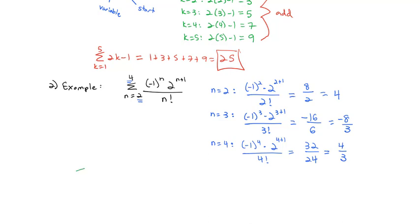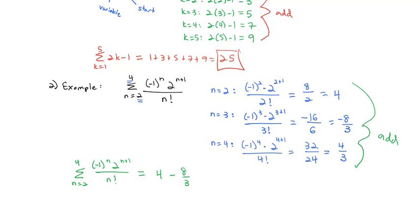So finally, the sum as n goes from 2 to 4 of negative 1 to the n times 2 to the n plus 1 over n factorial is the sum of those terms: 4 plus negative 8/3 plus 4/3. Getting a common denominator on 4 gives us 12/3. So we have 12 minus 8 plus 4, which equals 8/3. A series is adding the numbers of a sequence. The more challenging bit is not evaluating a series, but taking a series and writing it in sigma notation.